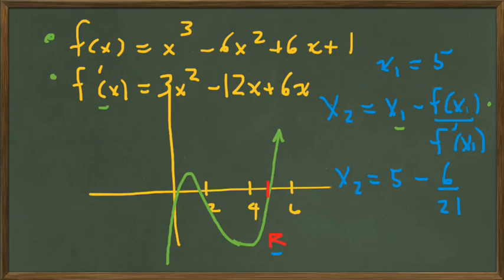So we're not actually going to go through the calculations, but it's pretty easy to see that f of x1 is 6, obtained by just plugging 5 into f of x, and that f prime of x1 is 21. So putting that together, we have that x2 is this. So this x2, 4.714, is our first guess for the root r.